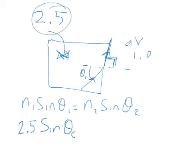N1 sin θc is our critical angle, which is θ1, and that equals the refractive index of air, 1.0, times the sine of 90 degrees.